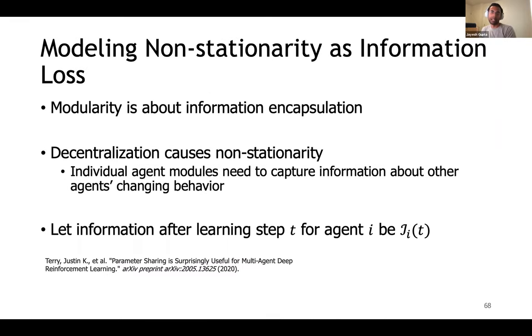Now the question is whether we can mitigate this problem. According to a recent paper, one way to think about non-stationarity during learning is as a problem of information loss. Because other agents are changing their behavior, information gained by an agent by interaction with the environment quickly deteriorates.